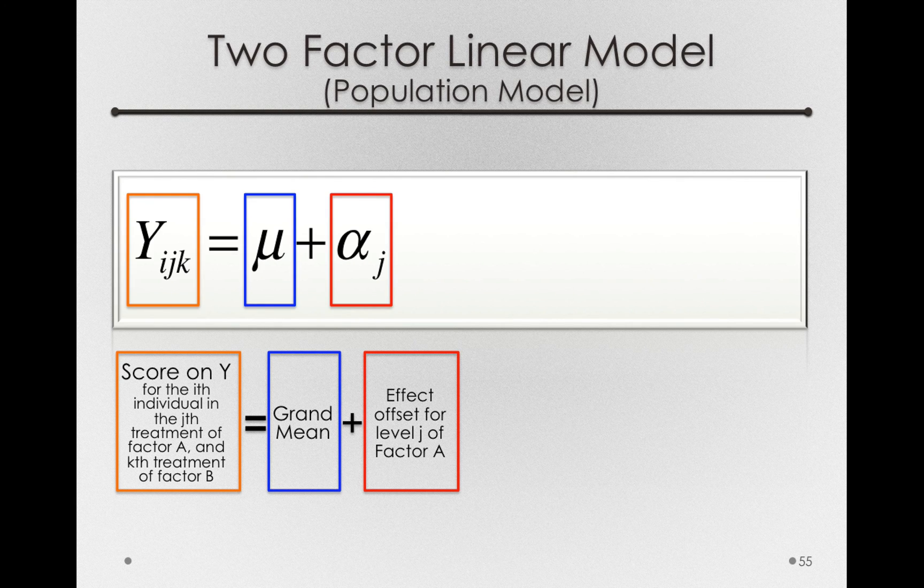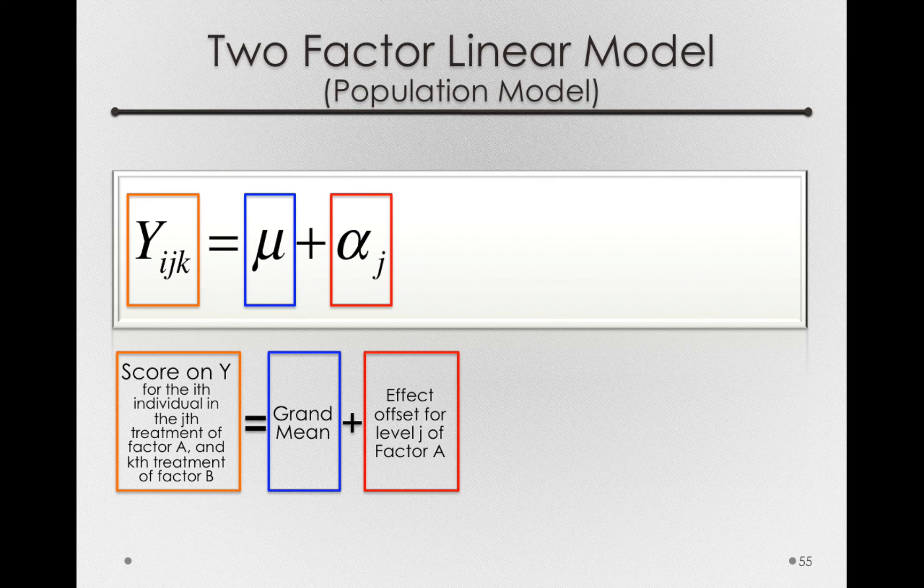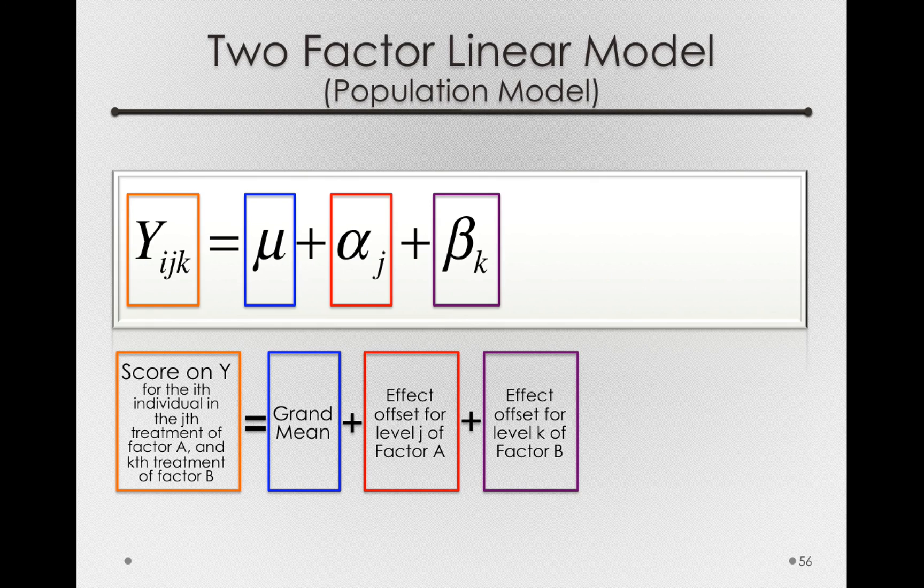Next, we need the separate offsets that are due to the effect of factor B. In our model, it'll be time of day. And in this notation, it'll be the beta_k's. So these are the effect offsets for level k of factor B.